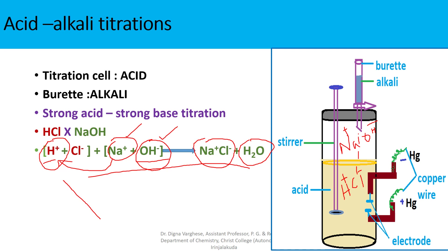In summary: first, the conductance decreases when NaOH is added to the HCl solution, because the fast-moving H+ ion is replaced by Na+ ion. Therefore the conductance decreases. After the end point is reached, as more alkali is introduced into the titration cell, the conductance increases due to the fast-moving OH- ions.